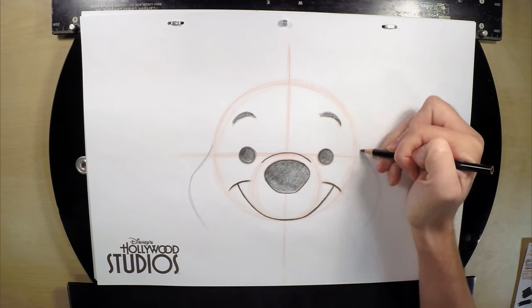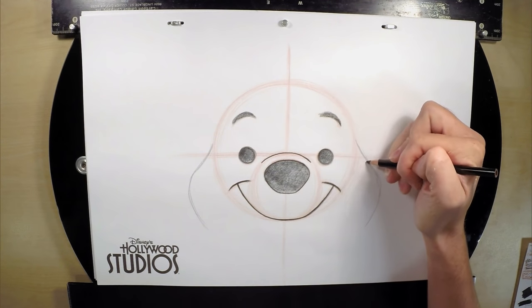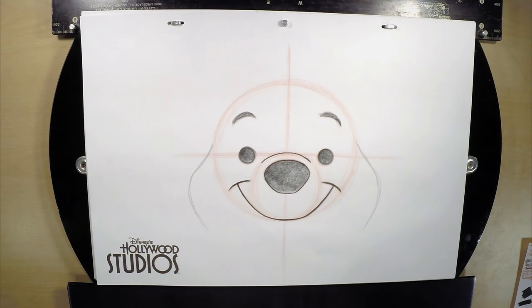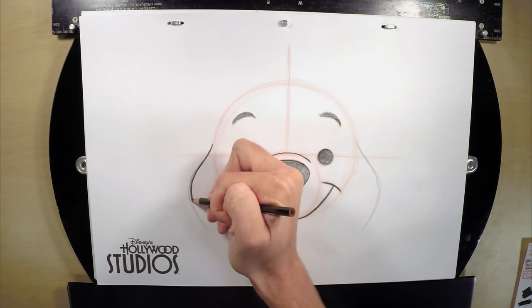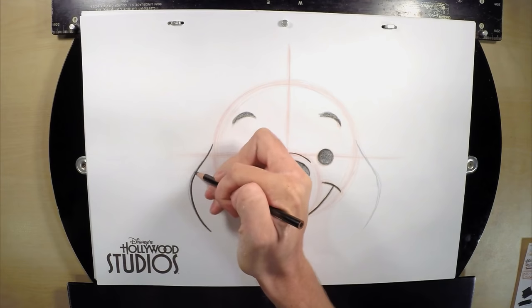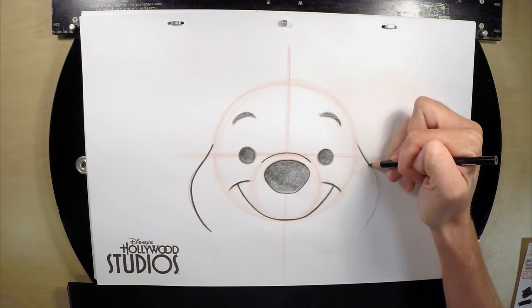You should be able to latch onto that cheek and that dimple and just go squish, squish, squish. And we can go ahead and darken those once you're happy with them. You don't have to wait. Squishy cheeks.